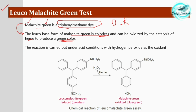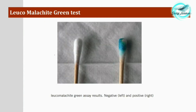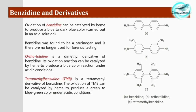In the reaction, leucomalachite green substrate — which is colorless — in the presence of hydrogen peroxide as the oxidizing agent and heme as the catalyst, is converted into an oxidized product which is green or blue-green in color, giving a presumptive positive identification of blood. You can see the results: the negative result on the left and the positive result showing blue-green or completely green color on the right.